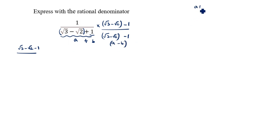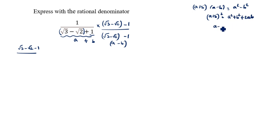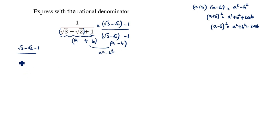The formula for (a + b)(a - b) equals a squared minus b squared. Also, (a + b) whole square equals a squared plus b squared plus 2ab, and (a - b) whole square equals a squared plus b squared minus 2ab. So (a + b)(a - b) gives us a squared minus b squared.